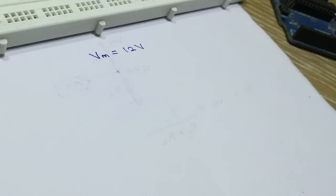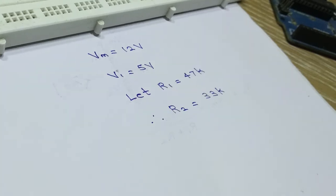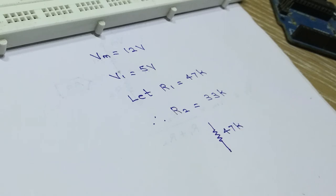For example, let the maximum voltage to be measured Vm be 12 volts and R1 be equal to 47 kilo ohms. Then using the formula, R2 comes out to be equal to 33 kilo ohms. Now build a voltage divider circuit using these resistors.